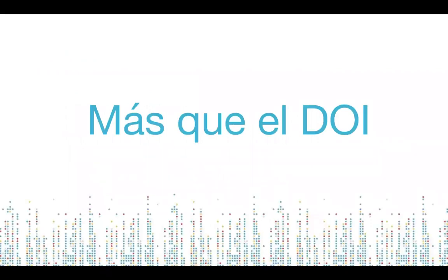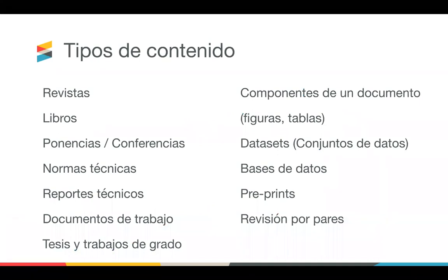Muchas personas asocian Crossref con DOI, pero es importante entender que Crossref no es solo sobre los DOI. No estamos definidos por un servicio en particular, sino por cómo apoyamos la comunidad académica como un todo. Los DOI no son un indicador de calidad de una publicación o de la organización que los registra, ni una marca de calidad de la investigación presentada. Un DOI es un enlace persistente y un identificador de un elemento de contenido. Hay muchos tipos de contenido que se pueden registrar con Crossref, como artículos de revistas, libros, actas de conferencias, informes, conjuntos de datos y preprints.